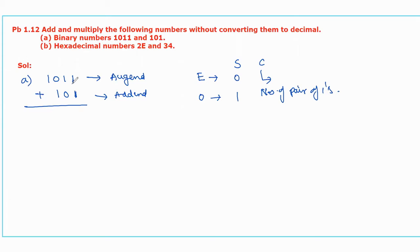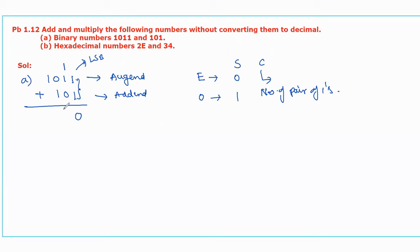Now let us start the addition from LSB: 1 plus 1. Even number of 1s, so the sum will be 0. The carry is the number of pairs of 1s — here 1 and 1 form one pair, so one carry is forwarded to the next bit. Next: 1 plus 1 plus 0, that means two 1s. Again an even number of 1s, the sum will be 0, and one pair of 1s means one carry is forwarded.